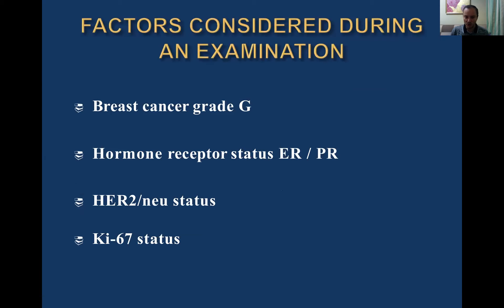Immunohistochemical examination is also needed. We must determine hormone receptor status (ER/PR) for all cases. HER2/neu is a specific tyrosine kinase receptor marker for breast cancer. Ki-67 status is a proliferation marker. All of these are needed for planning treatment.